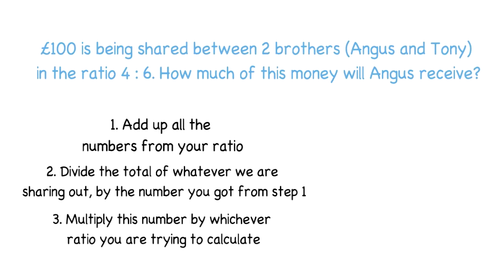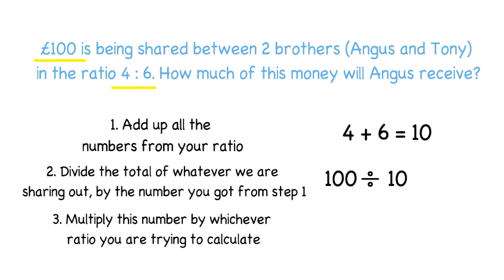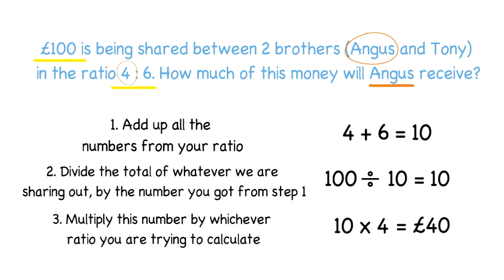In this example we're asked to share 100 pounds between two brothers, Angus and Tony, in the ratio four to six. Just as before, we add up the numbers from our ratio — four and six make ten. Then we divide 100 pounds by ten, which gives me ten. Lastly, we multiply by whichever ratio we're calculating. Angus is the first name, so his ratio is four: ten times four gives 40, and that's how much he will receive.